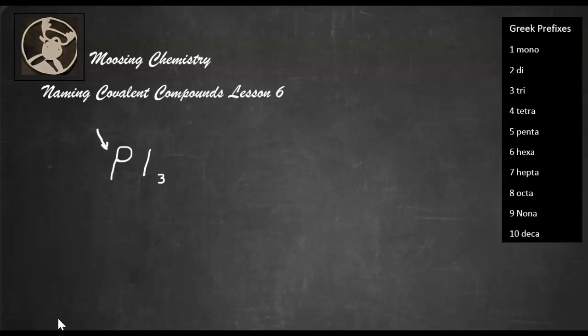So we look on the periodic table, and we notice that this element is phosphorus. All right, and so we're going to spell it there. So phosphorus, and this is iodine.